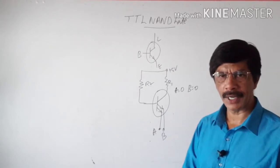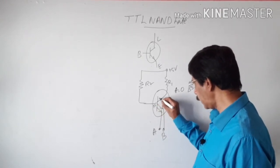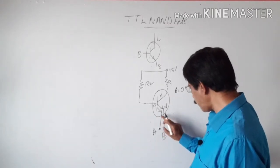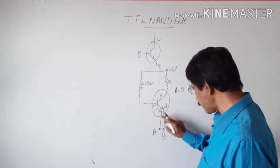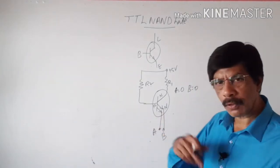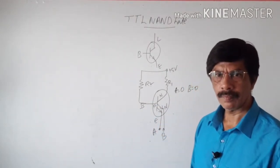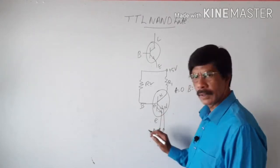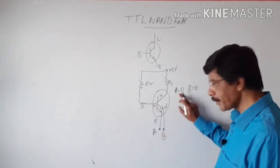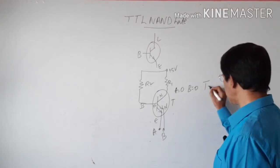When A=0 and B=0, both are zero — meaning negative voltage. This is an NPN transistor. When negative voltage is given to both emitters A and B, this voltage forward biases the base-emitter junction of the transistor. Because of this forward bias, the transistor T is switched on.